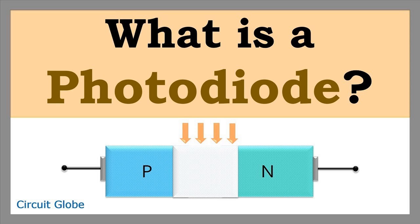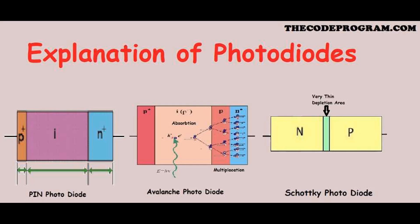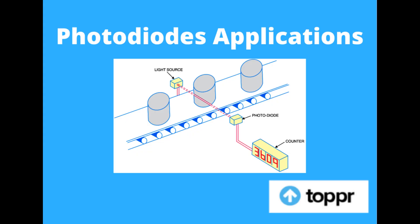Industrial automation: Position sensors use photodiodes to detect the position of objects or components in machinery, crucial for automation and process control. Barcode scanners convert reflected light from barcodes into electrical signals for quick and accurate reading of product information. Machine vision systems use photodiodes in quality control and robotic guidance to capture and process images for inspection and automation tasks.